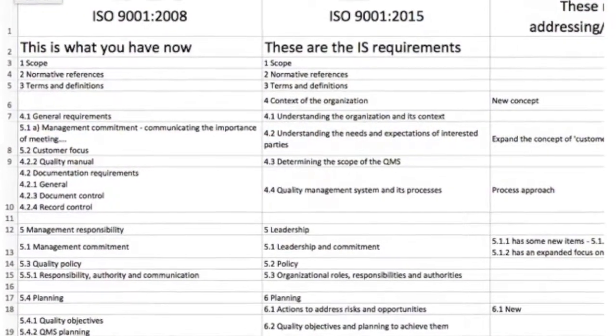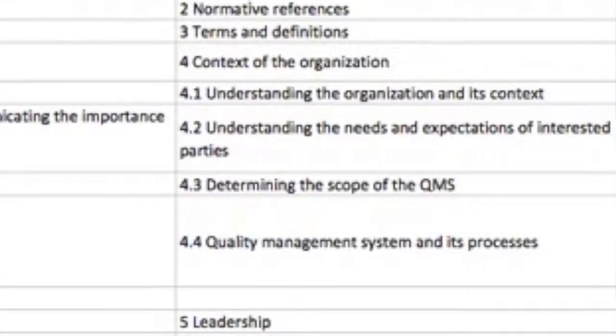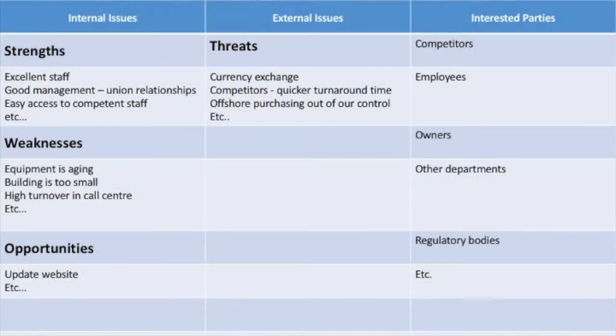We've included a spreadsheet in the downloadable material, and this spreadsheet starts off with context — you can see a screenshot of it right here. You can use this to keep track of where your context will be documented. Now, the standard does not require that you actually document it and make a table. However, the standard does require that you monitor it and keep abreast of any changes in the three areas: internal issues, external issues, and interested parties. The simplest way to do that is to have a table like this one, and then review that table in your management review.